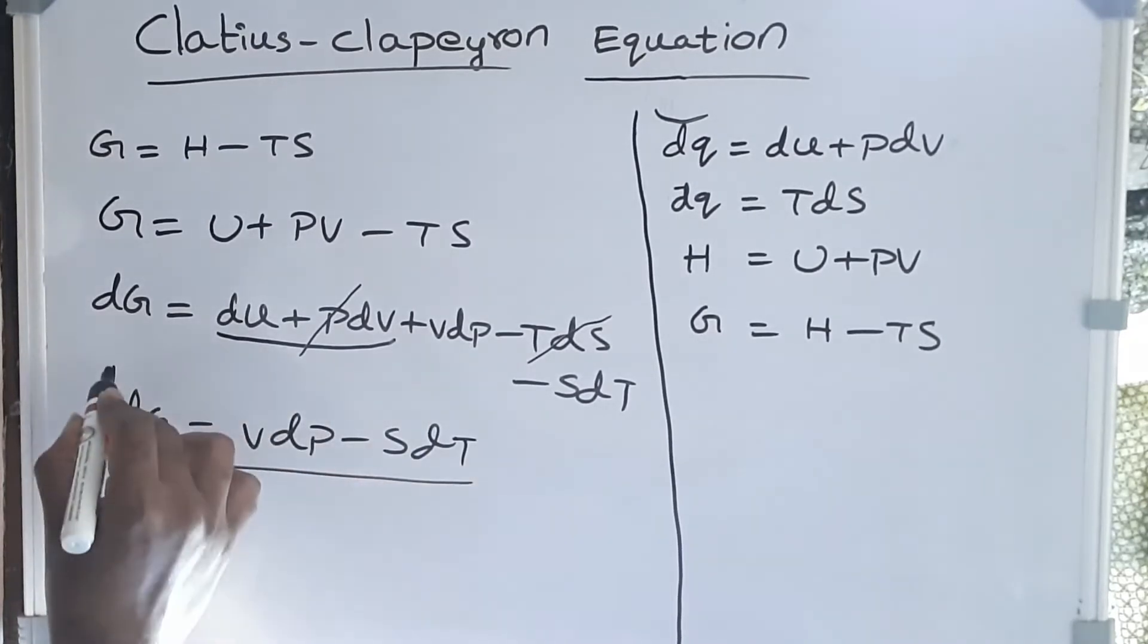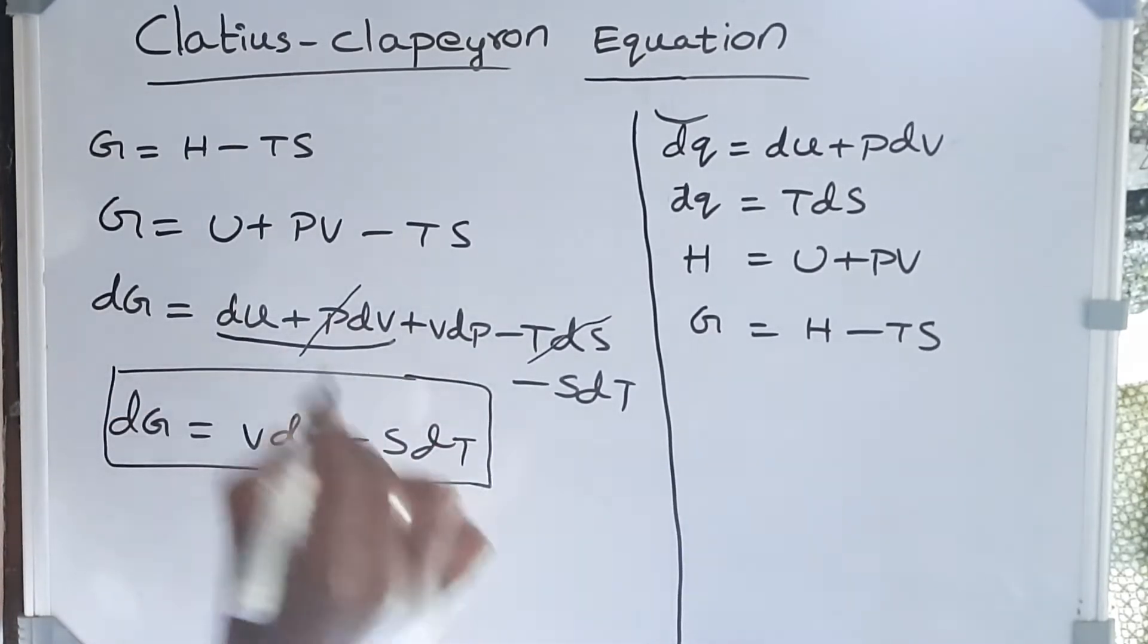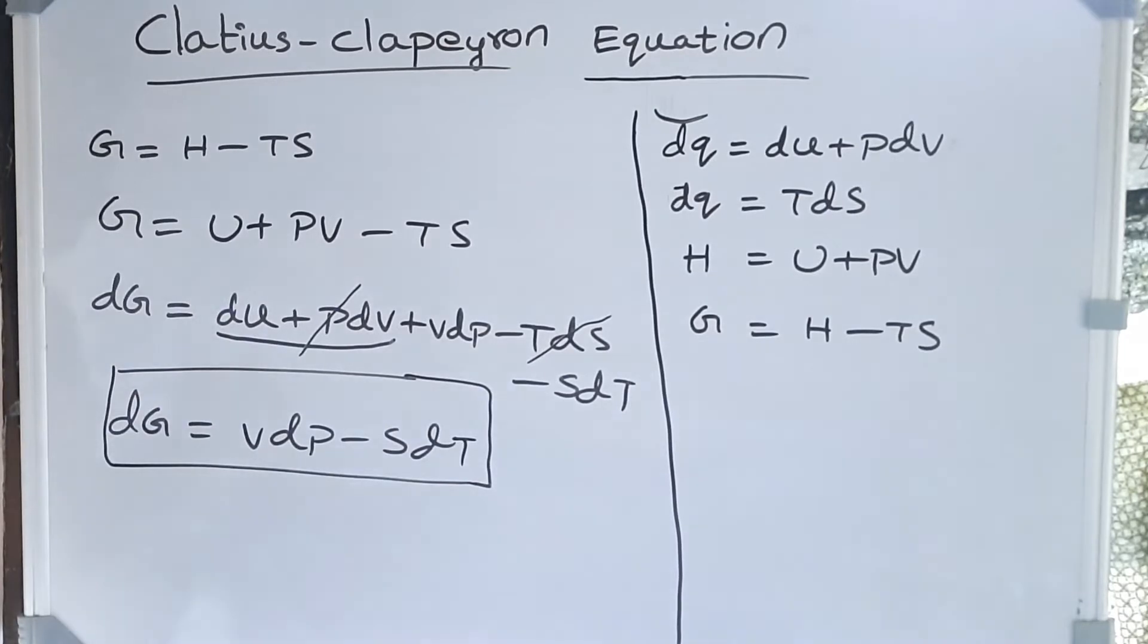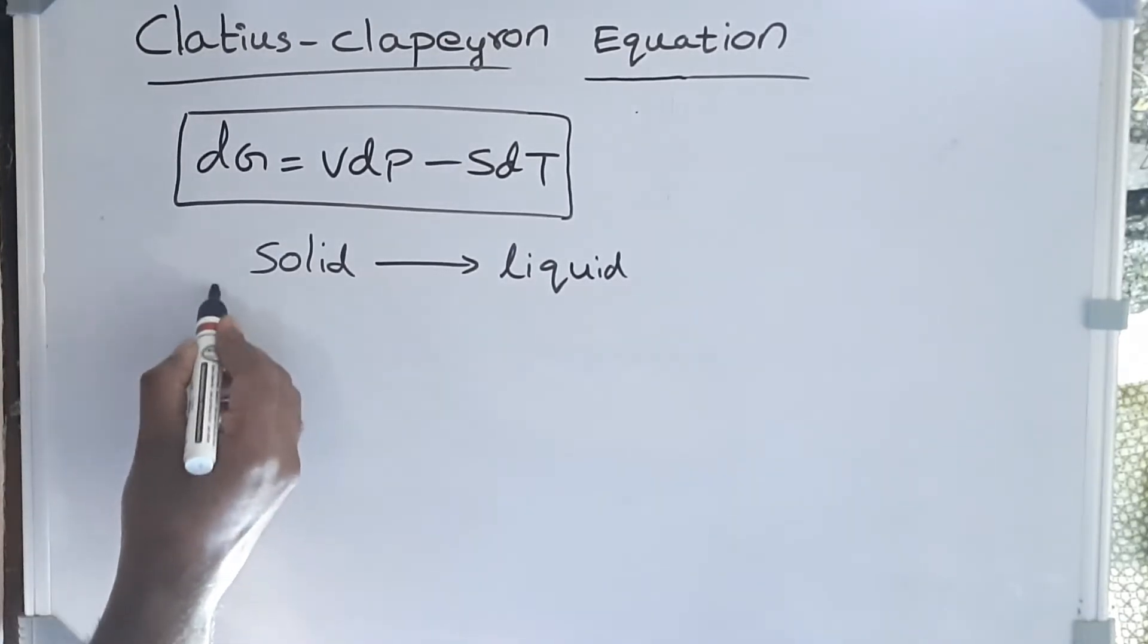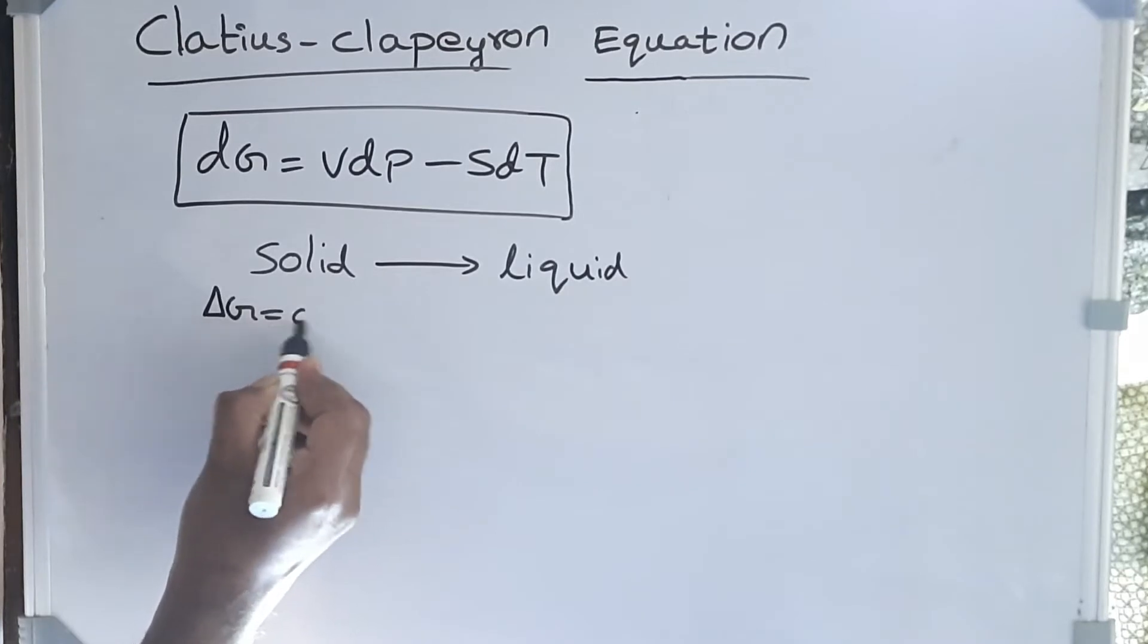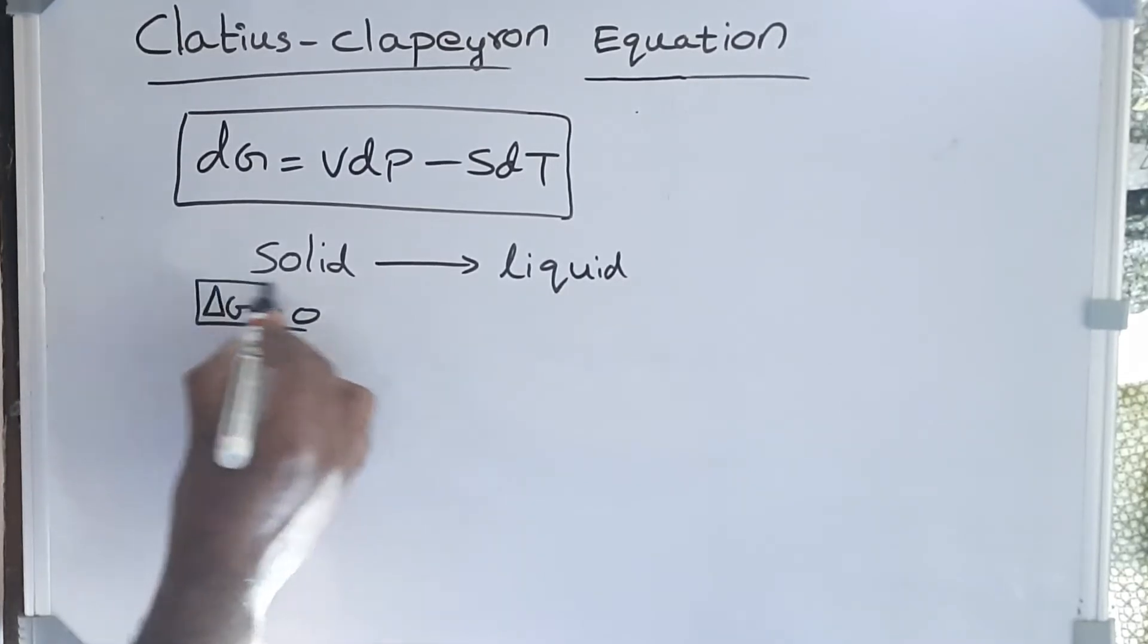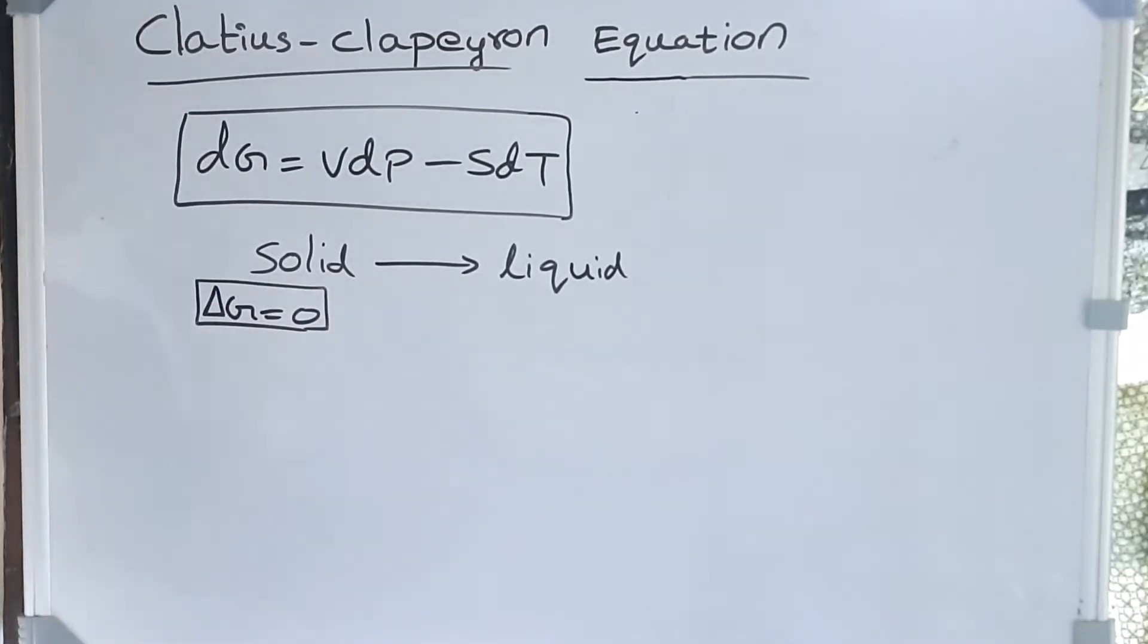And this is a very important Maxwell equation. From this equation we're going to derive our Clausius-Clapeyron equation. Friends, let's consider a transformation: if a solid is transforming to liquid at the transformation temperature, friends we know ΔG = 0, or the free energy of liquid equals the free energy of the solid. Let's write the free energy of the solid.